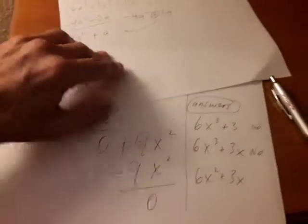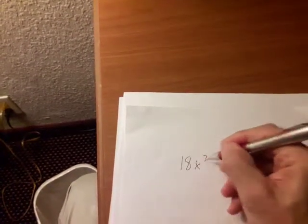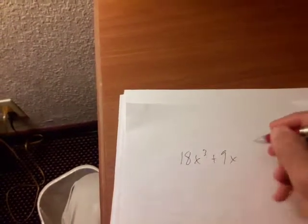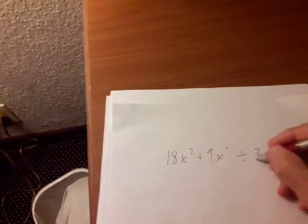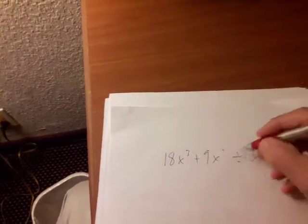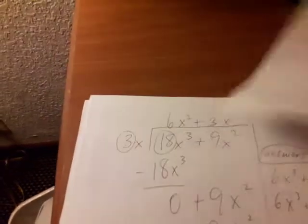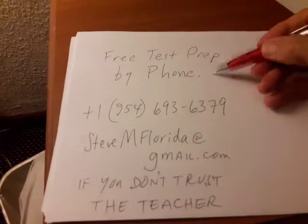So the problem looked like something like this: 18x cubed plus 9x squared divided by 3x. Thank you very much for watching Free test prep by phone.